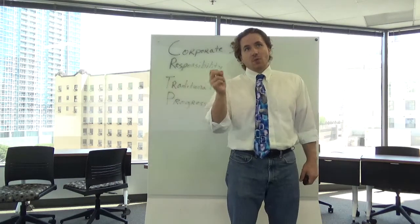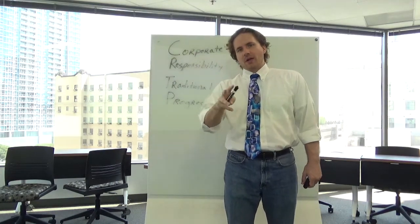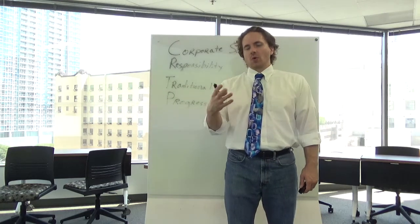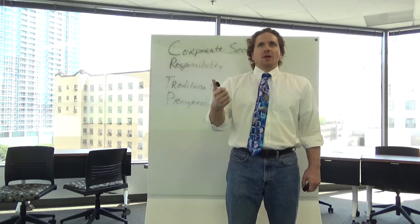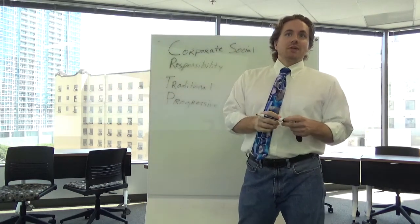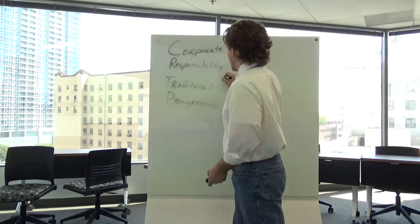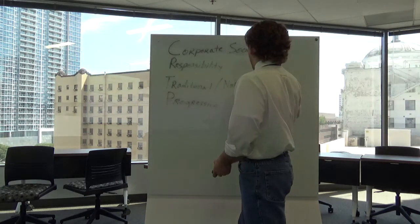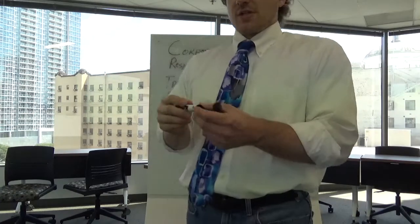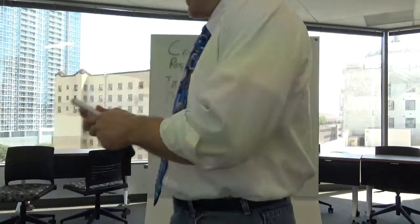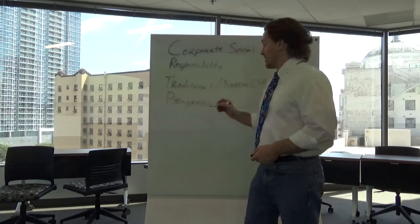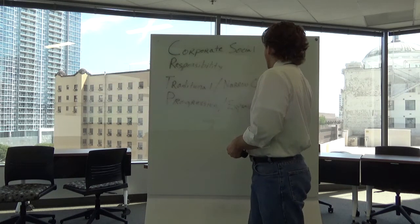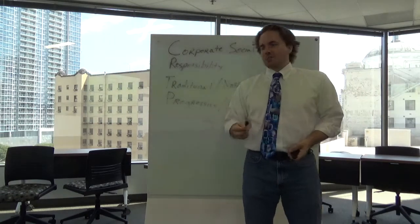And then you've got the progressive side where you say, well, let's create value by, of course we need to meet market demands, we need to be a financially viable corporation, but let's also contribute to the mitigation of social problems or improve society. Two different approaches. People would also call this, in addition to calling it maybe the traditional, this is also called a narrow response versus expansive. These are kind of synonyms.